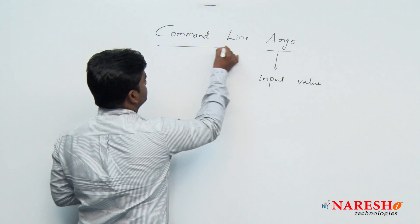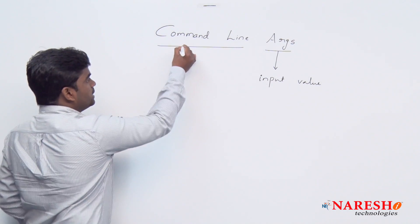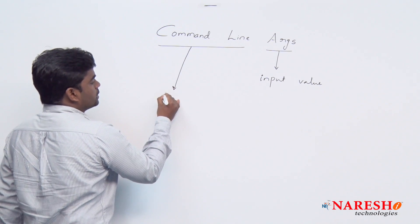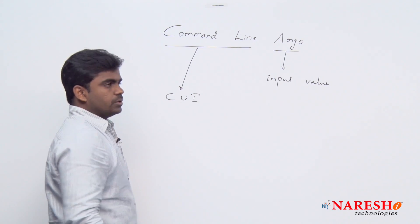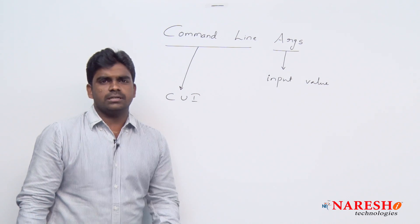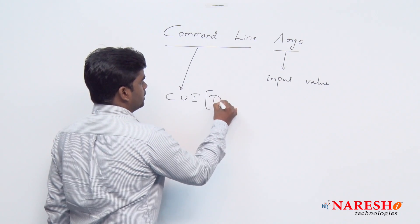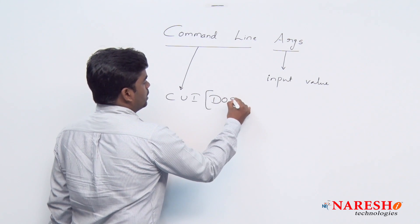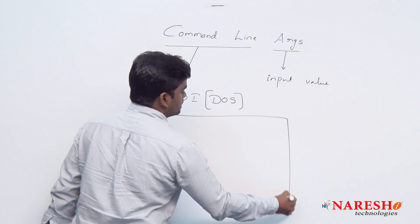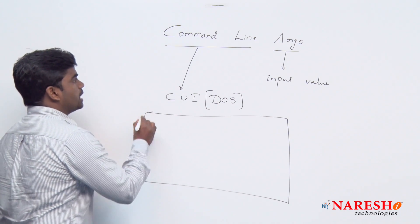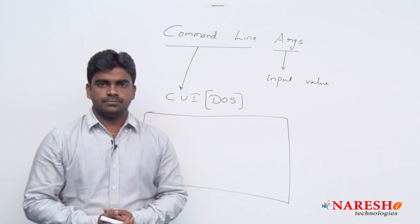What is command line? Command line is nothing but CUI — command user interface, or we can call it as character user interface. The best example is the DOS operating system — the black screen, we can call it as a command line or command prompt simply.